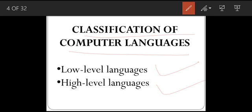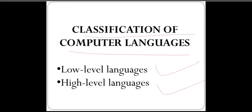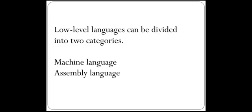Although we already know, a computer can understand only one language — that is binary language. So why is there a need for low level languages and high level languages? Let's study. Low level languages can be further divided into two categories: machine language and assembly language.